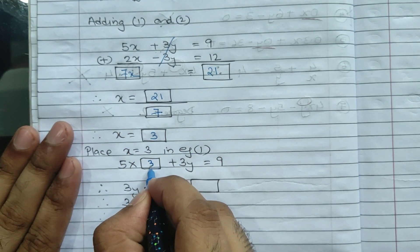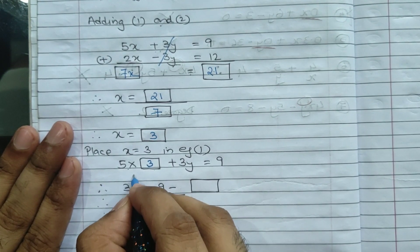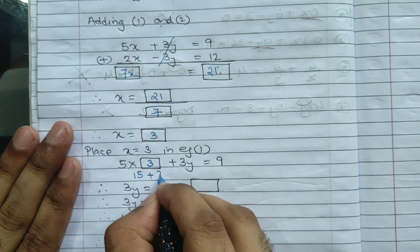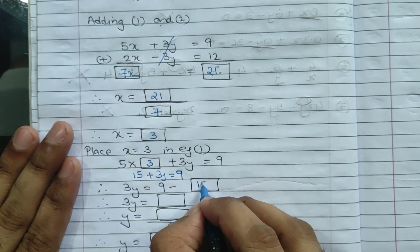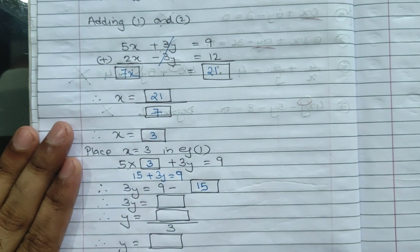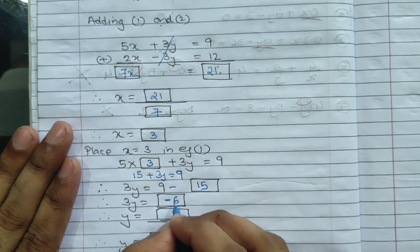So in place of x we will put 3. So 5 into 3 gives me 15. Plus 3y equals 9. So 9 minus 15.